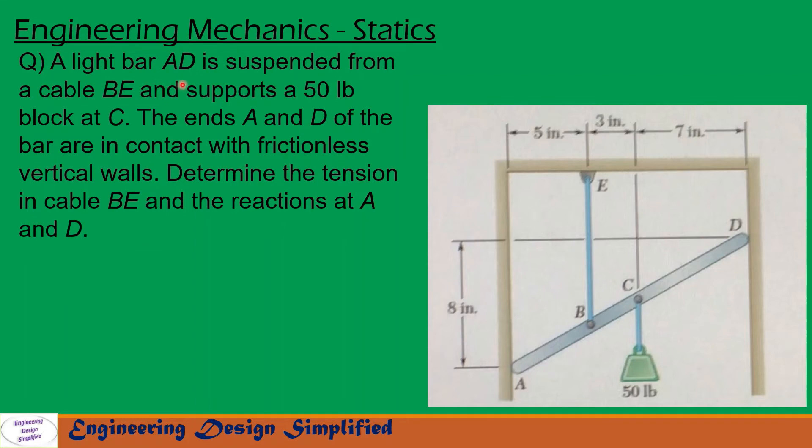Today's problem is: a light bar AD is suspended from a cable BE and supports a 50 lb block at C. The ends A and D of the bar are in contact with frictionless vertical walls. Determine the tension in the cable BE and the reactions at A and D.